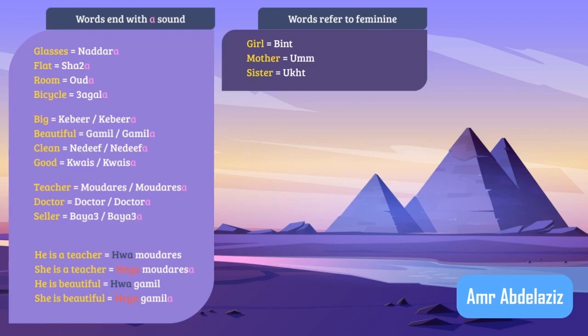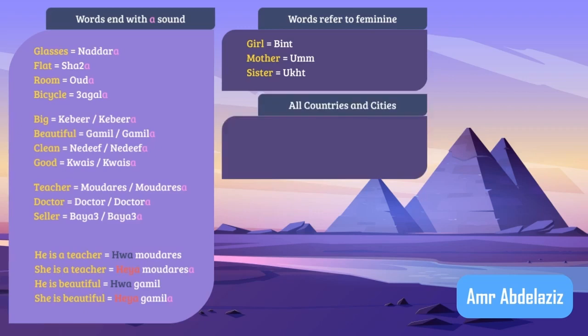All of them don't end with a sound, but they refer to feminine. The third case of feminine words is that all countries and cities are feminine, even though they don't end with a sound. For example, Egypt — 'masr', China — 'al-tsin', Japan — 'el-yaban'.